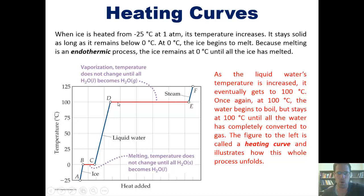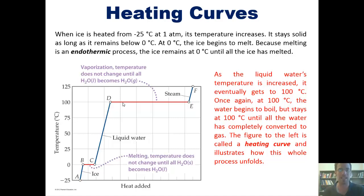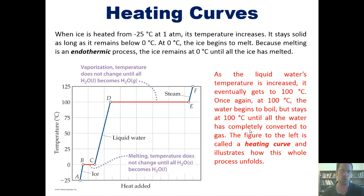The liquid water begins to boil. However, the temperature does not change. Right at 100 degrees Celsius, any time we introduce more heat, all of that heat energy does not go toward raising the temperature. Instead, it goes toward converting the liquid water into gaseous water. That will continue until all of the water has completely converted into gas. After that point, additional heat energy will change the temperature of the now gaseous water. This figure, which depicts all of that, is called a heat curve, and illustrates how the whole process unfolds.